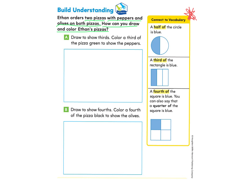When we look at this circle, we notice that it is cut into halves — two equal shares — and one of them is colored in. A half of the circle is blue, so one half is colored blue. Now the next part: we have three equal shares, or thirds, and a third of the rectangle is blue. So one section is filled in with blue.